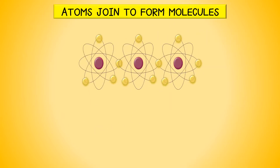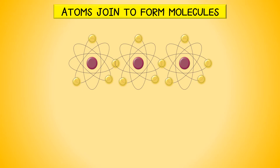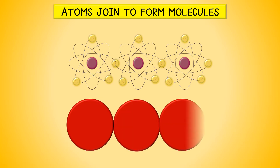Atoms join together to make molecules. This illustration shows the joined atoms. Scientists also draw molecules like this. Each circle represents an atom. Together, the atoms form a molecule.